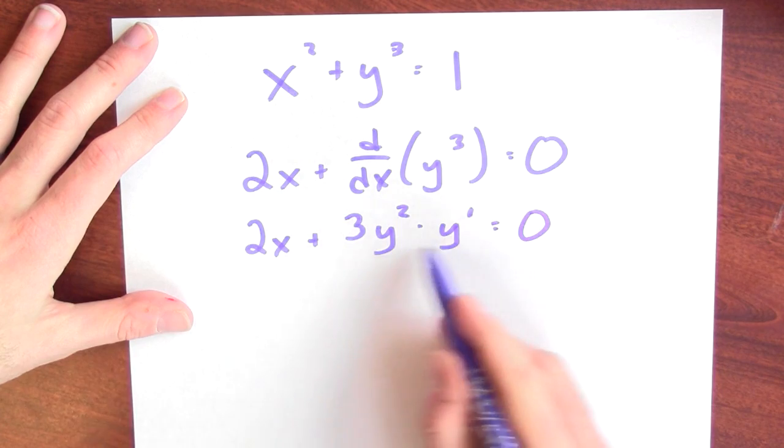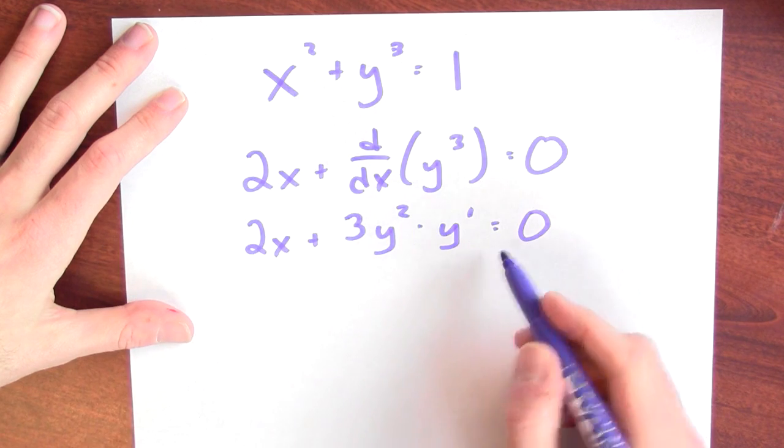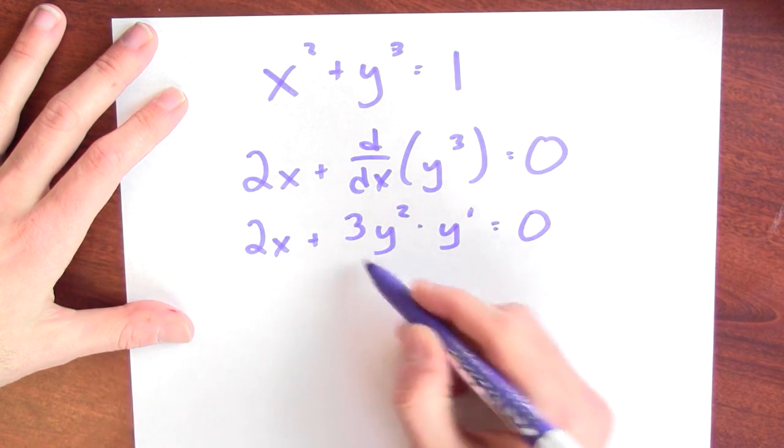And as long as you're careful to use the chain rule, you'll be able to do these kinds of implicit differentiation problems, and you'll eventually solve for y prime in terms of both x and y. The chain rule is our friend.